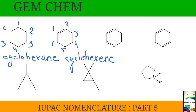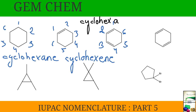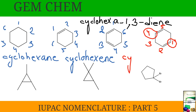For the next one there is a requirement to write the locant number because the double bond can have another position. So we start numbering from the double bond: 1, 2, 3, 4, 5, 6. The name will be cyclohex-1,3-diene. And if we see the next example, the double bonds occupy positions 1 and 4, so the name will be cyclohex-1,4-diene.